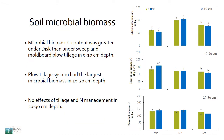Soil microbial biomass followed a more or less similar trend to 24-hour soil respiration and potentially mineralizable carbon. There was no nitrogen rate response in 0 to 10 cm soil depth in any tillage system. Microbial biomass was highest under disc tillage in 0 to 10 cm soil depth, and was higher in plow tillage than the other two systems in 10 to 20 cm soil depth. Microbial biomass carbon was not significantly different in 20 to 30 cm soil depth.